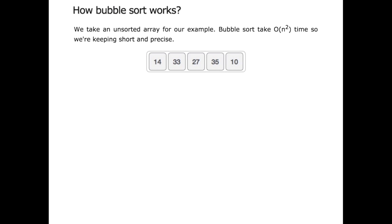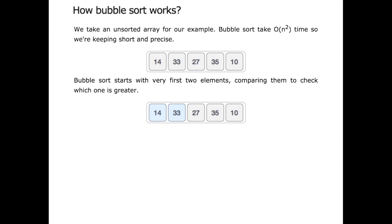So how does a bubble sort work? We take an unsorted array. In this example we've got 5 numbers: 14, 33, 27, 35 and 10. We're keeping the set short because the longer the set of numbers the more time it takes, so in this example let's stick to 5. The bubble sort starts with the first two elements and compares them to see which one is greater.